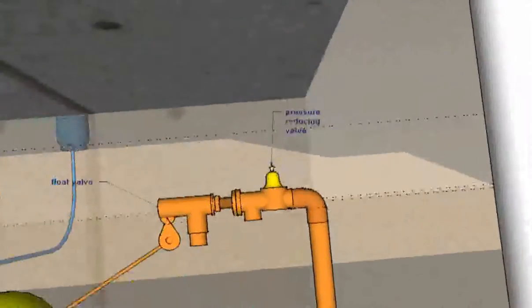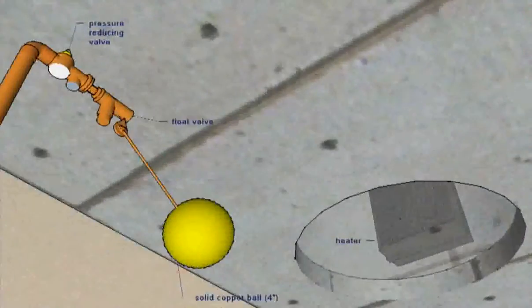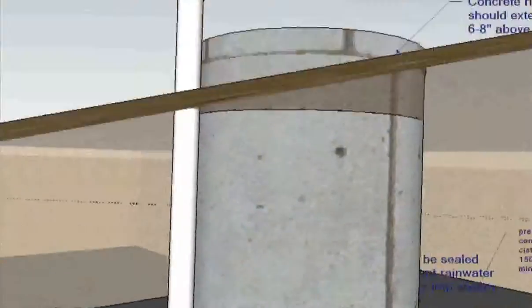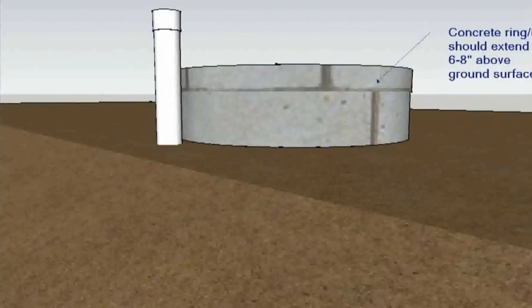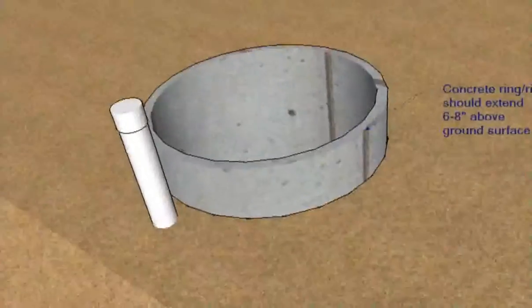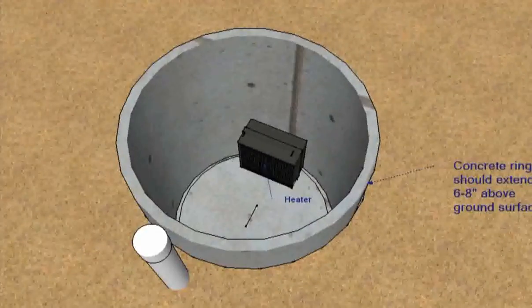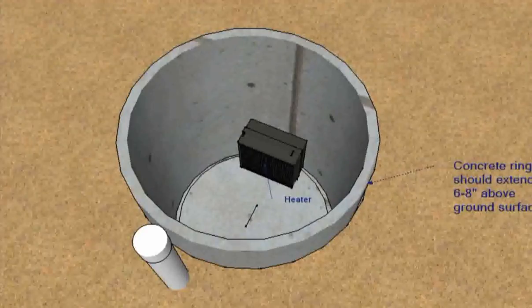The float valve is also a critical reason why a heater should be installed in the cistern or concrete riser during the winter. Without heat, the float valve is prone to freezing shut. If a customer's service line or float valve freezes, the customer will need to pay for water to be delivered into their cistern by truck. Over a period of several months, the costs can become significant.